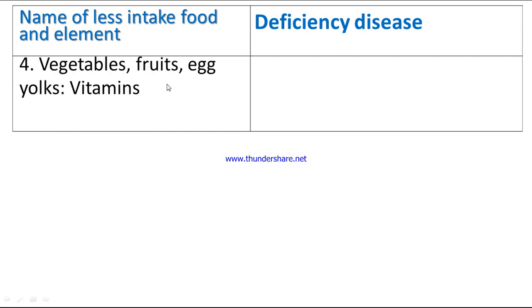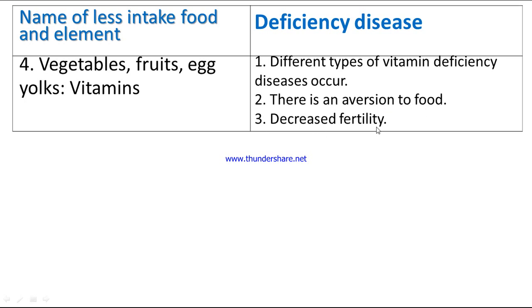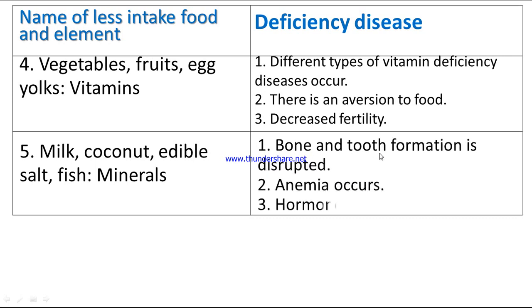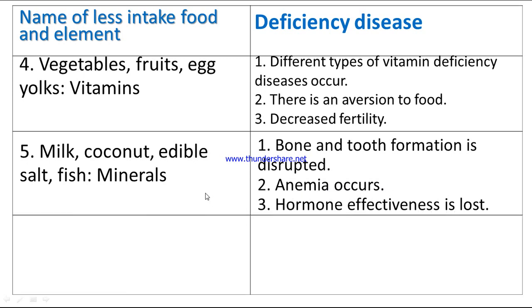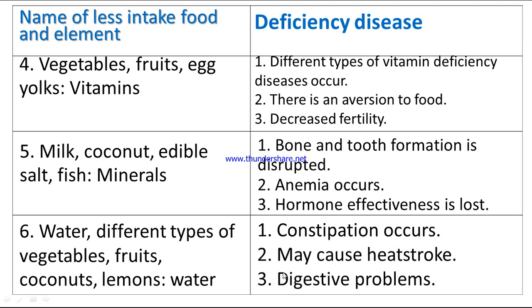Number four: vegetables, fruits, and egg yolks are vitamins. Deficiency disease — different types of vitamin deficiency diseases occur, there is an aversion to food, and decreased fertility. Number five: milk, coconut, edible salt, and fish are minerals. Deficiency disease — bone and teeth formation is disrupted, anemia occurs, and hormone effectiveness is lost. Number six: water from different types of vegetables, fruits, coconut, and lemons. Deficiency diseases — constipation occurs, and it may cause heat stroke and digestive problems.